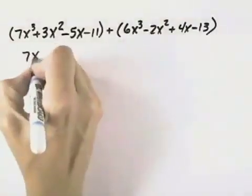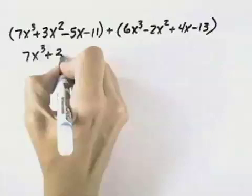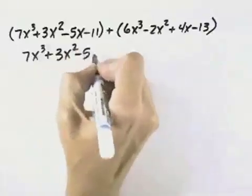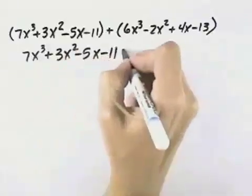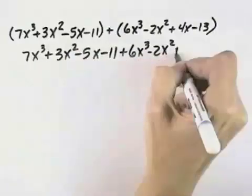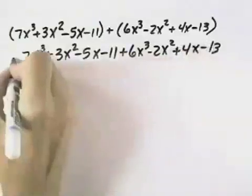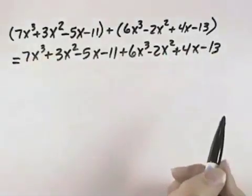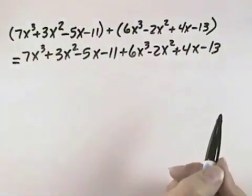The first thing we can do is remove the parentheses that are separating the two polynomials. Once we've done that, we can see each of our individual terms. From there, what we want to do is group like terms so that we can combine like terms.